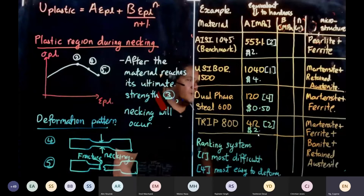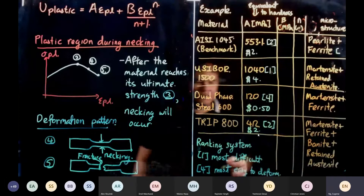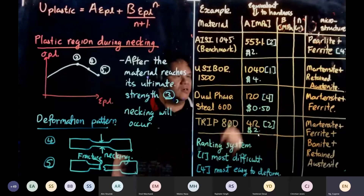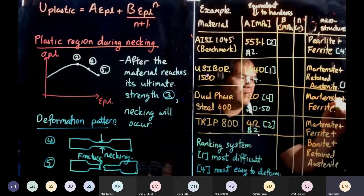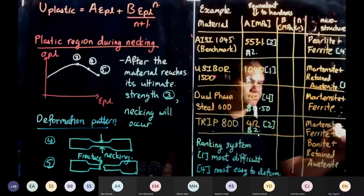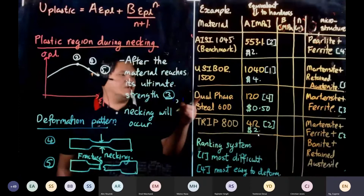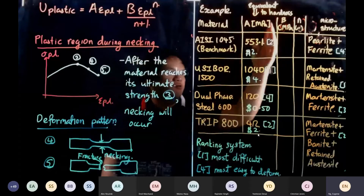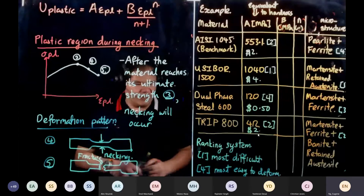When you look at the microstructure, 1045 does not have martensite, so it is the most easy to deform. Based on deformation knowledge alone, this will be my number one easiest, number two, and number three. For 1045, it is your easiest to deform based on hardness, but once you incorporate microstructure, things change significantly.